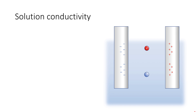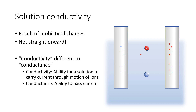When we think of electrochemistry, we think of solution conductivity. We tend not to think about what's going on in the external circuit — only what's going on in solution between our two electrodes. It's worth flagging up that conductivity is different to conductance. Conductivity is the ability for a solution to carry a current through motion of ions, whereas conductance is simply the ability to pass current. Conductance applies to anything which carries electricity, but conductivity is specific to the solution.